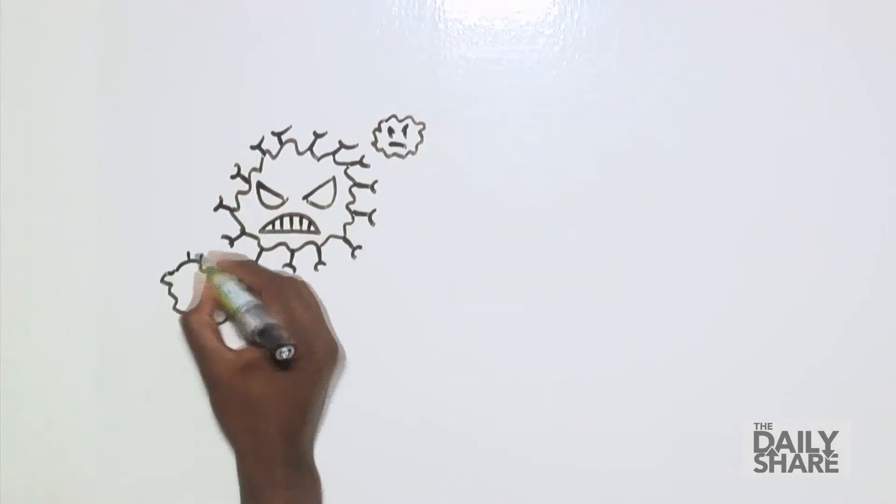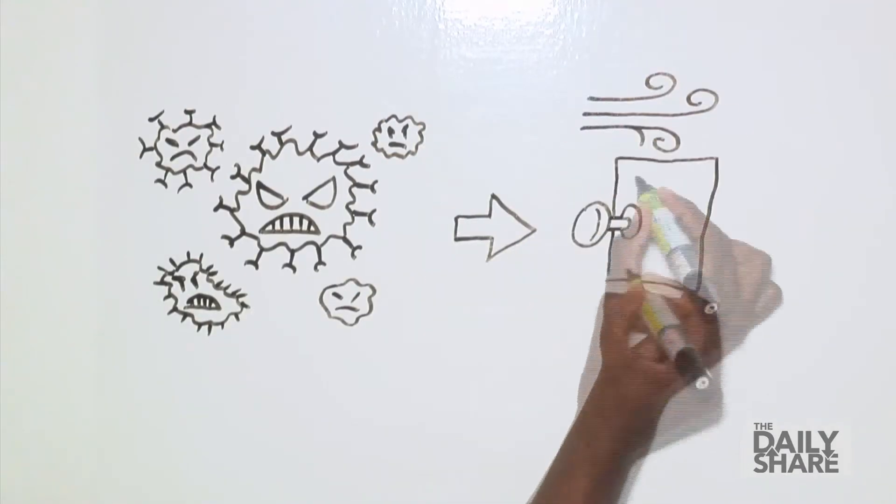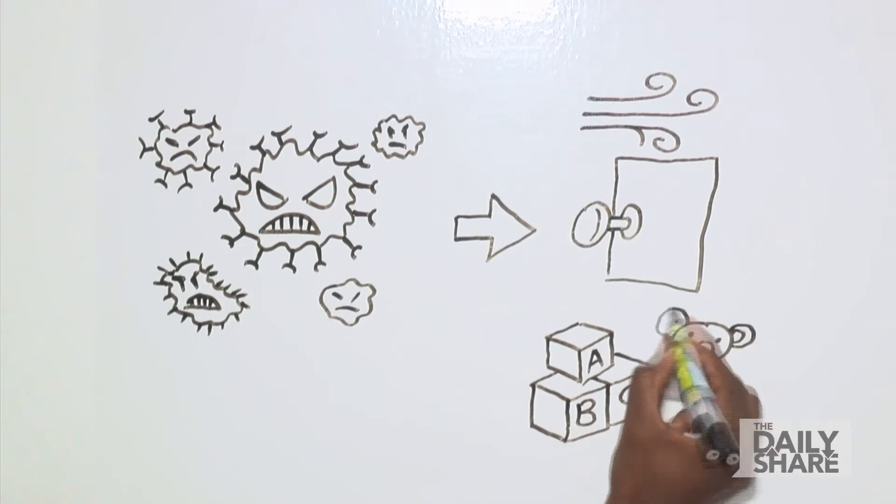So, how's the enterovirus spread? Much like a cold, it spreads through the air and lives on surfaces like doorknobs or toys.